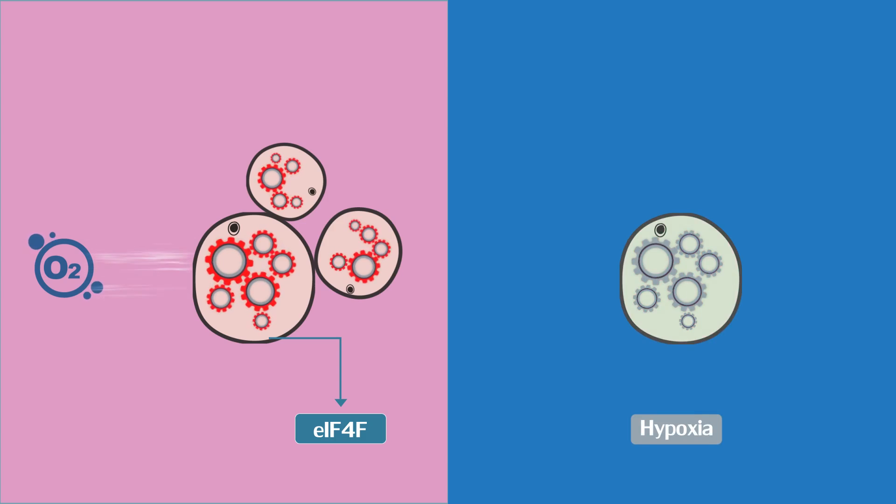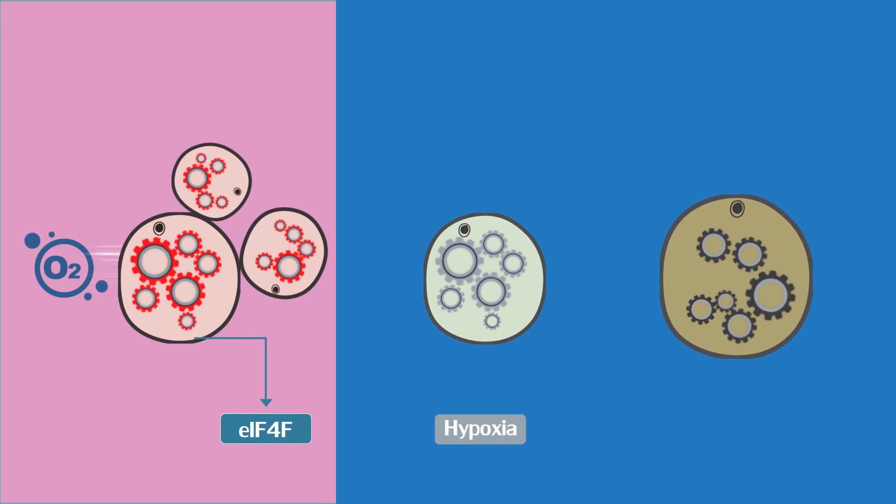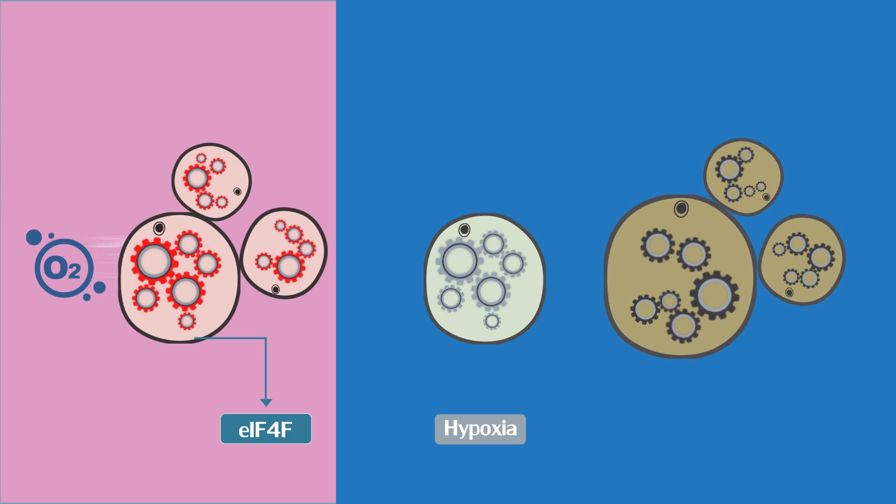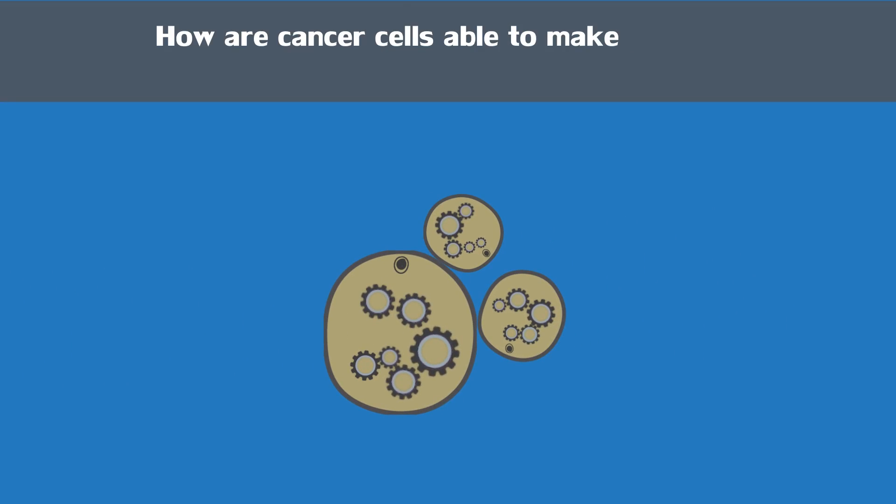But there is an exception. Through past research, we have learned that cancer cells can survive and grow in hypoxic environments. So how are cancer cells able to make proteins when there is a lack of oxygen?